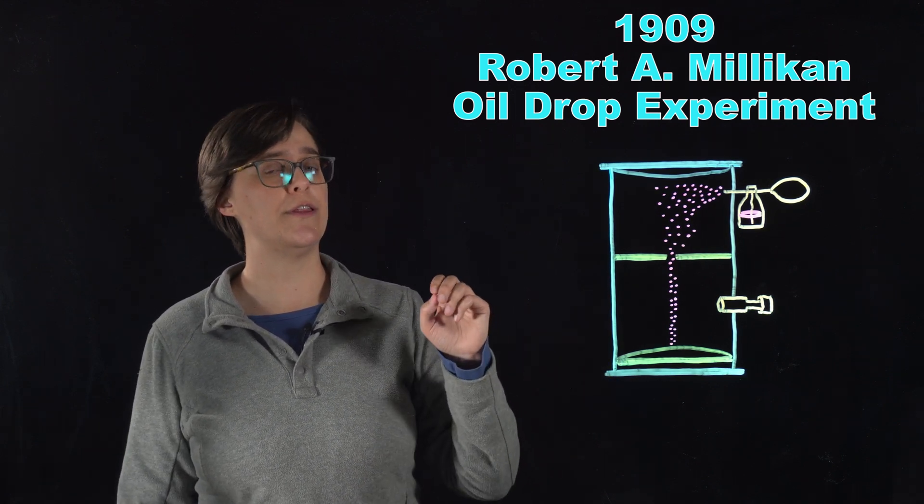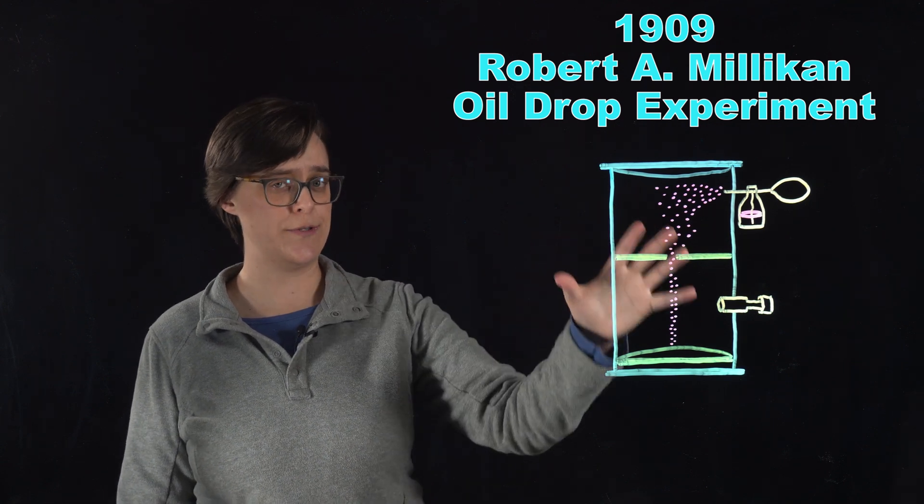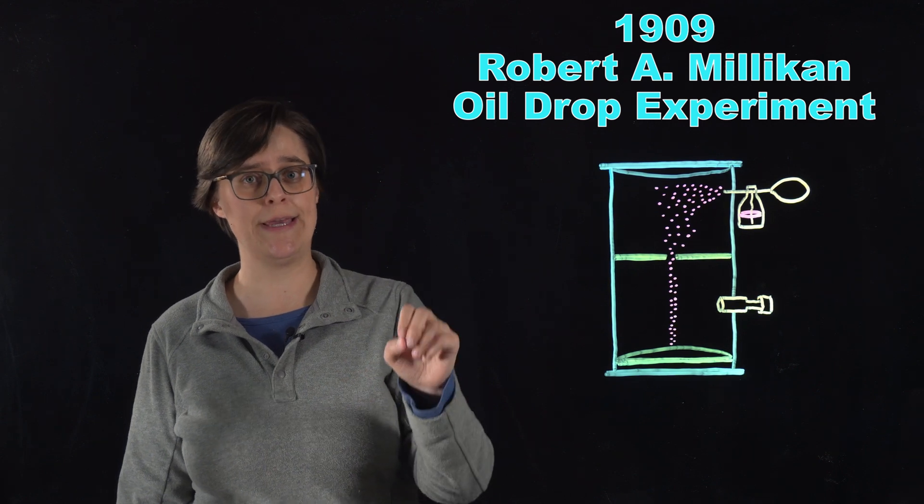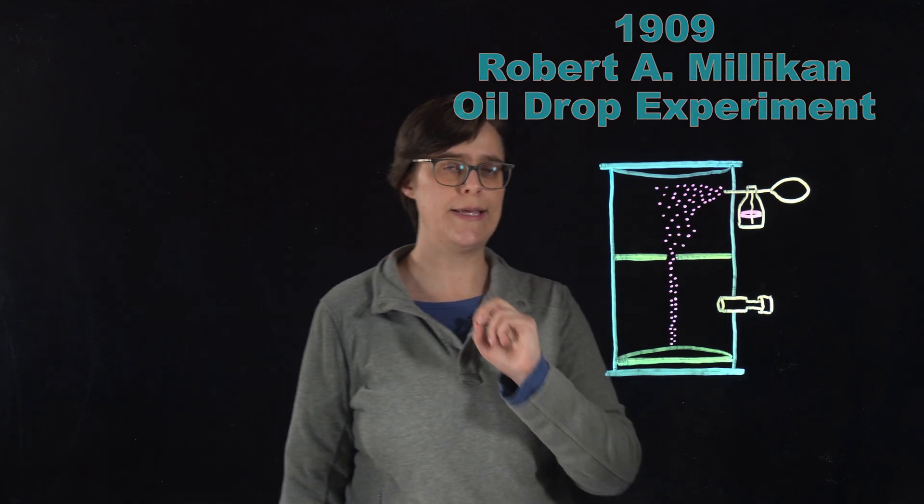He measured the charge of a single electron using this apparatus, and then using J.J. Thompson's ratio, he calculated the mass of a single electron. Here's how.